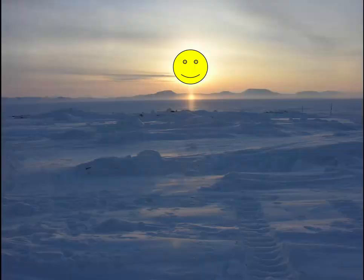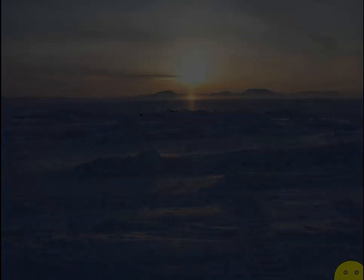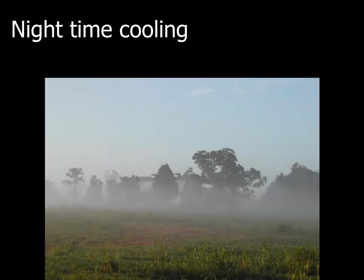Finally, one other important process of cloud formation happens every 24 hours. That's right — when the sun sets, nighttime cooling takes effect. When we take away the heat source, the earth's surface will cool. This often results in the formation of ground-level clouds, like this fog that happened early one morning.